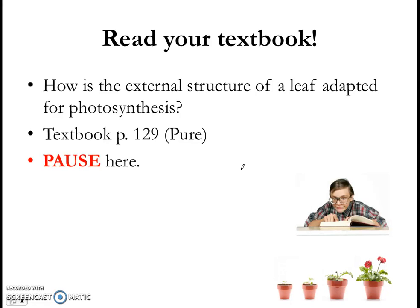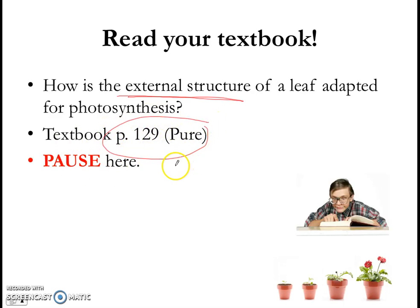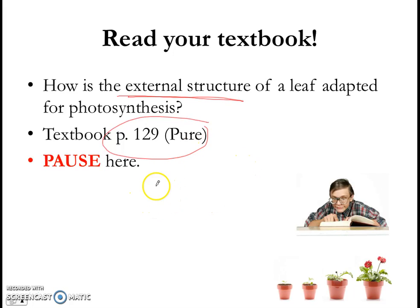In this first part, we're going to be looking at the question: How is the external structure of a leaf adapted for photosynthesis? So take a look at this page in your textbook for the Pure Biology students. Pause the video here — I want you to read first before going on. Read this page, give yourself about 5 minutes, and then move on with the video. You should be looking at Photosynthesis: Nutrition in Plants, Notes number 3. Most of your information can be found there. Pause for now.